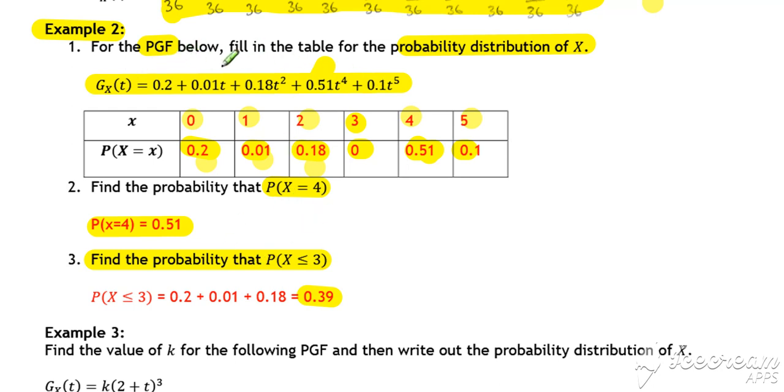Anything new about example 2 was just how the probability distribution was introduced to us by using the probability generating function form rather than the probability distribution form.